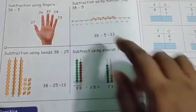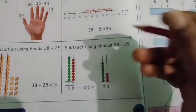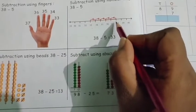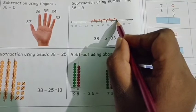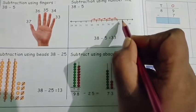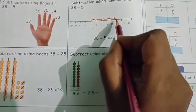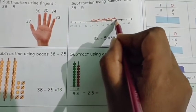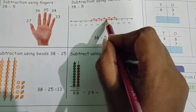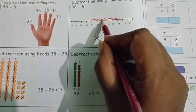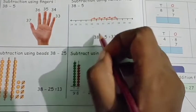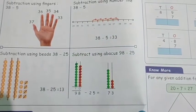38 minus 5 on the number line. Keep your pencil on 38. In subtraction, we go to the before number, drawing a curve: 37, 36, 35, 34, 33. 33 is the answer. We use before number line for subtraction.